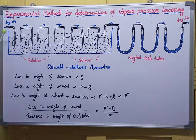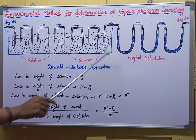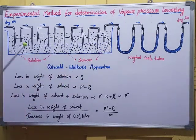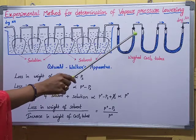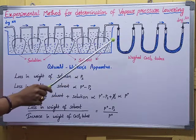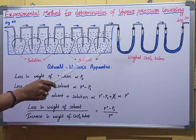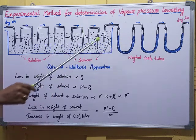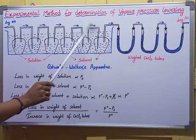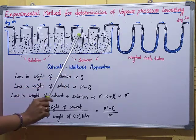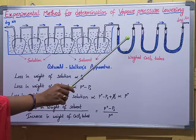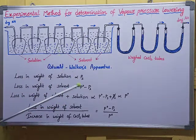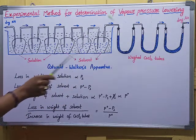While there is a loss in weight in the six solution and solvent bulbs, there is an increase in weight in the three CaCl₂ U-tubes. This is because dry calcium chloride — anhydrous calcium chloride — has the capacity to absorb the wet vapors (solvent vapors), and thus gains weight.